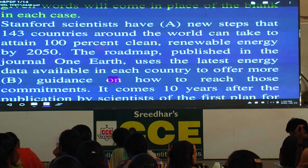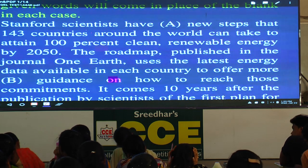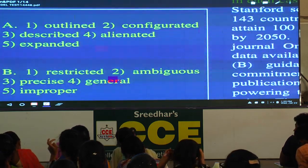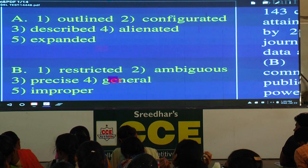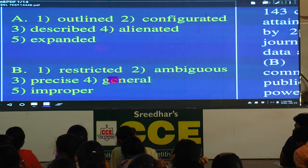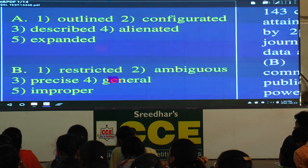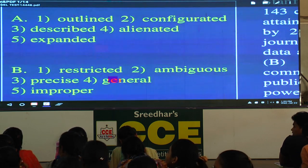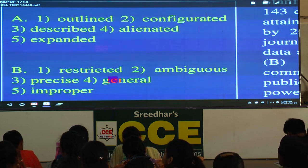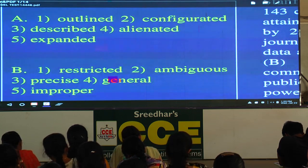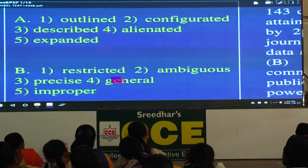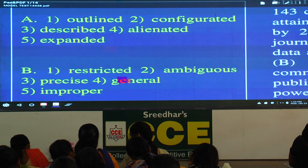Let's go back to the passage. Stanford scientists have new steps — what is the correct word? Reading the options: 'have outlined new steps' seems right, hold that one. 'Have configurated' — configuration doesn't go with steps, it goes more with instruments and gadgets, so mark the second option wrong. Write the combination: configuration goes with instruments.